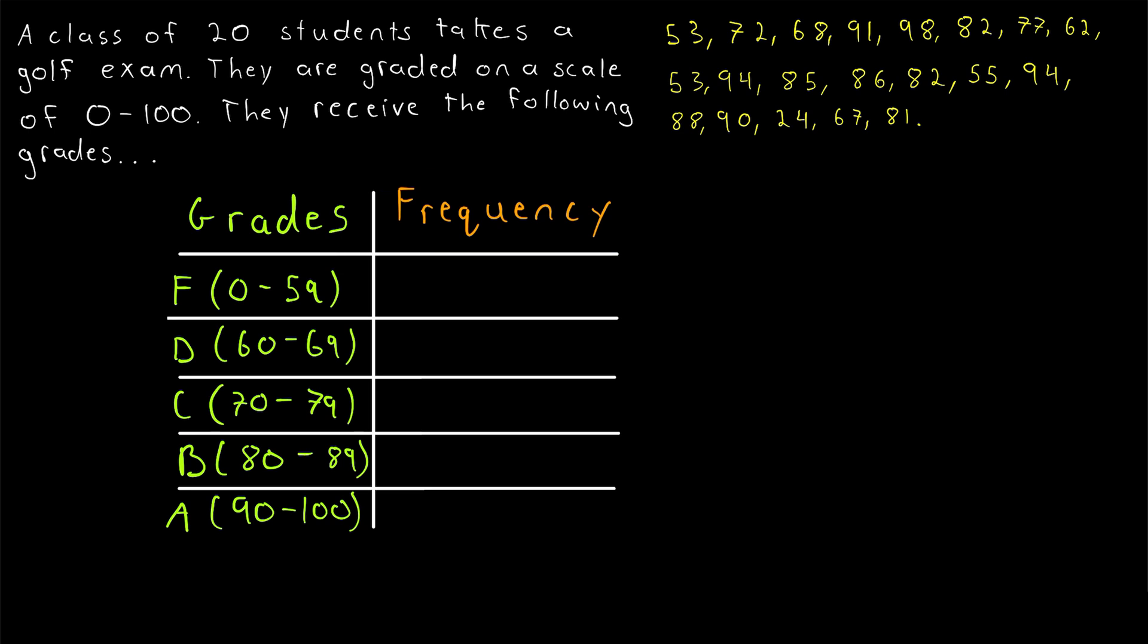All right, now we just have to count the frequency, the number of scores that fall into each one of these grade boxes that we have created. First, let's count up the F's, all of the grades that are between 0 and 59. So draw your attention up here to the data set. Let's count. 53, that's 1. Looking through here, another 53. That's 2. 55, that's 3 F's. And 24. Total of 4 F's. So we'll write that frequency there, 4.